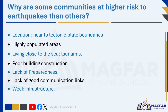Living close to the sea: people who live close to the sea where earthquakes occur may experience tsunamis. Poor building construction: communities with poorly constructed buildings and infrastructure are at greater risk during earthquakes, as structures not built to withstand seismic forces are more likely to collapse or suffer severe damage. Lack of preparedness: communities that lack adequate earthquake preparedness measures — such as emergency response plans, public education, and infrastructure reinforcement — are more vulnerable.